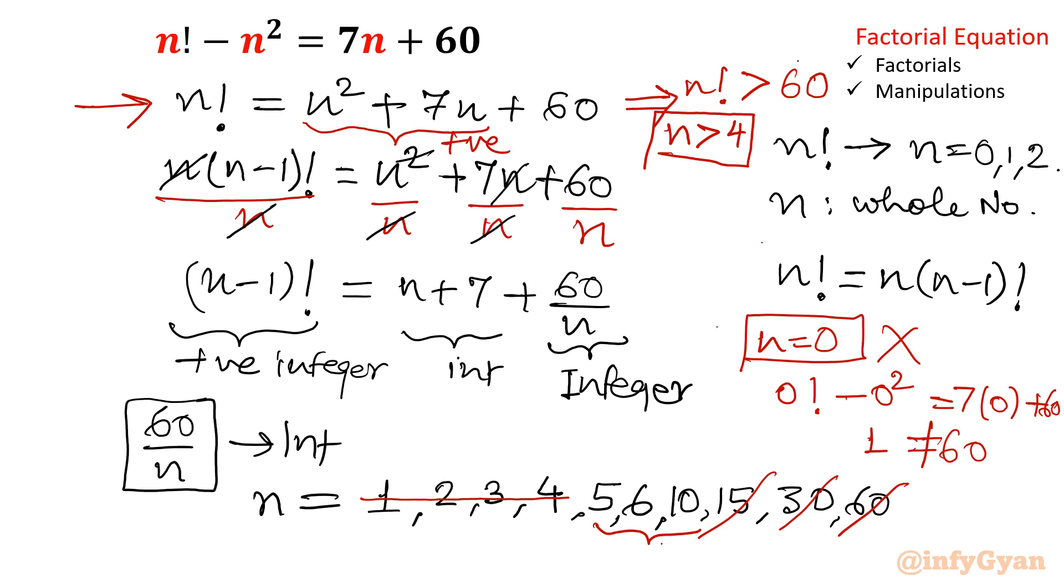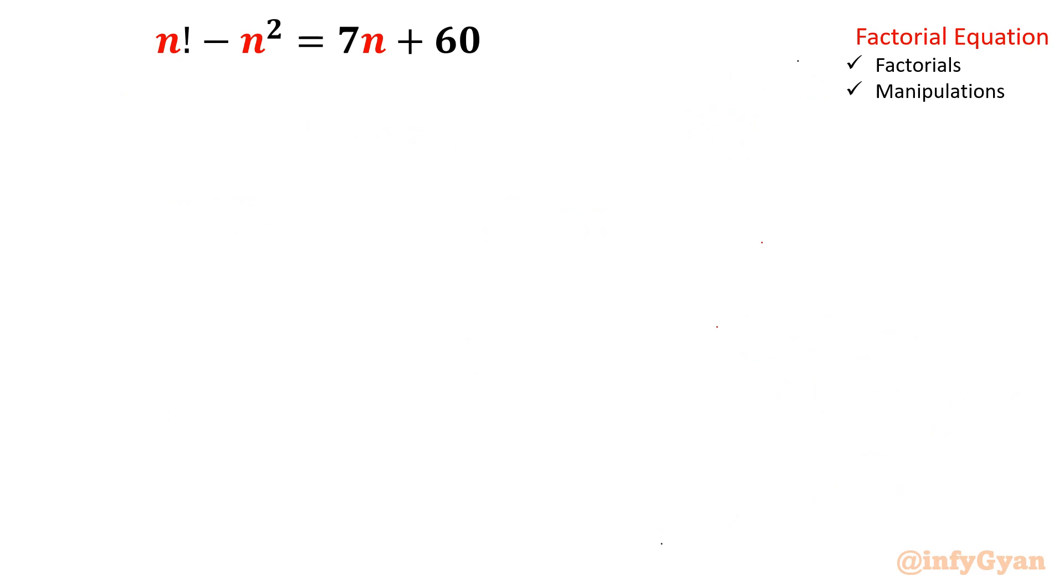So that will be one of the answer. So let me put n equal to 5. So 5 factorial minus 5 square is equal to 35 plus 60. This is 120 we know minus 25 equal to 95.